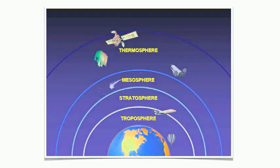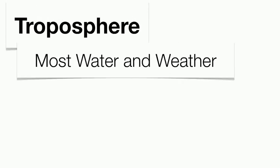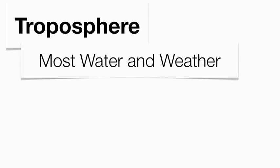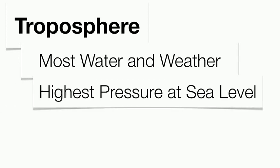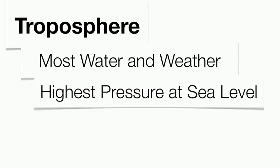Let's jump into the troposphere. This is the layer that we currently live in. It's where the majority of our water vapor is found, and with that being said, that's where the majority of our weather is going to be found as well. Because we live close to sea level, we're going to have the majority of the troposphere, all the stratosphere, all the mesosphere, and all the thermosphere pushing down on top of us — so we're going to have the greatest atmospheric pressure found within the troposphere.